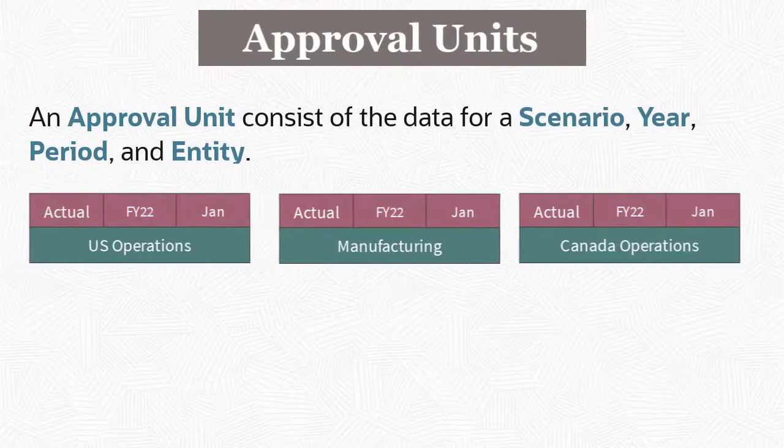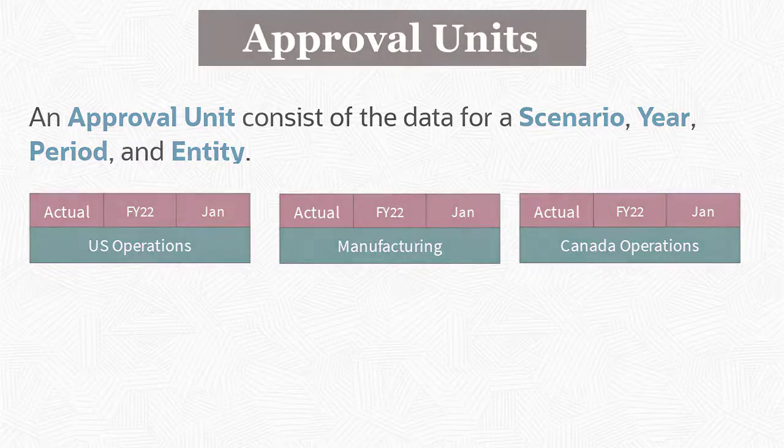The approval process is organized by approval units. An approval unit consists of the data for a combination of scenario, year, period, and entity.